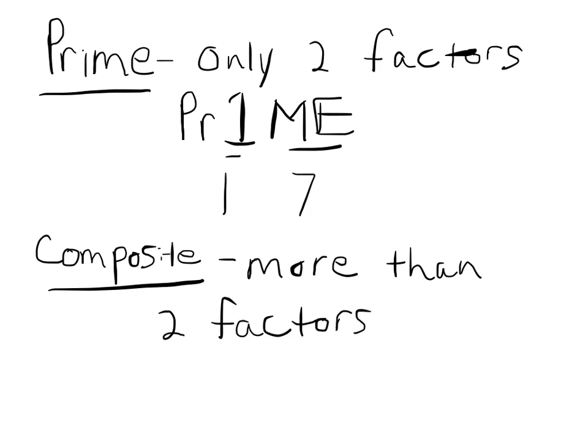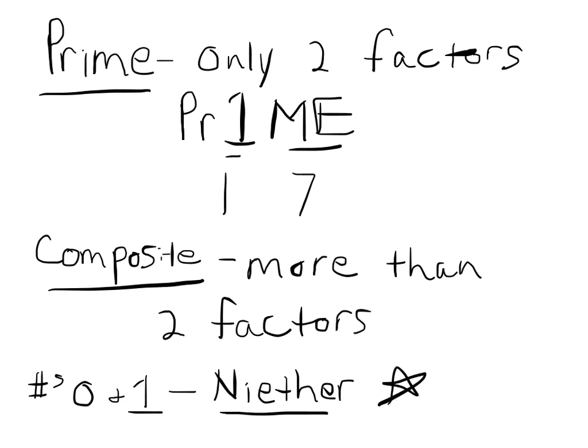Composite numbers simply have more than two factors. Also, the numbers 0 and 1 — are they prime or composite? Hopefully you didn't let me trick you, because 0 and 1 are neither. So if you ever see an answer that says 0 and 1 are prime numbers, that's not the case. This is a key point you cannot forget.